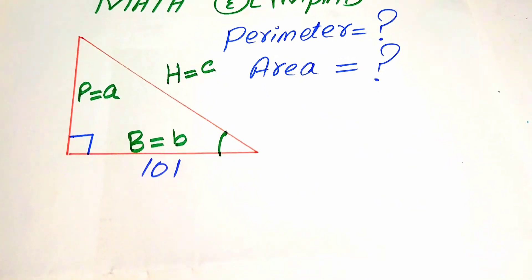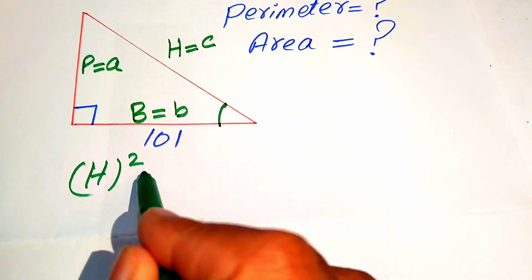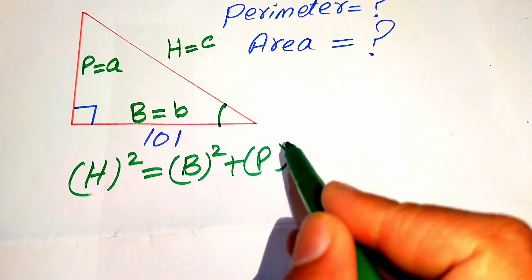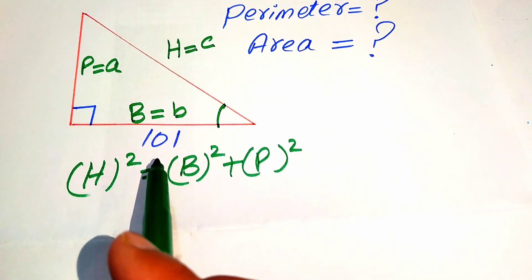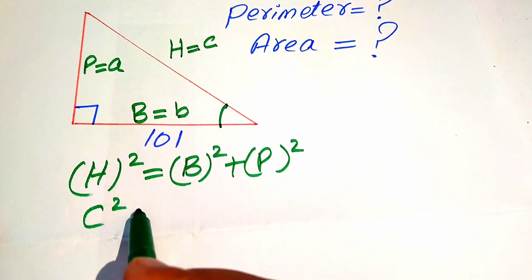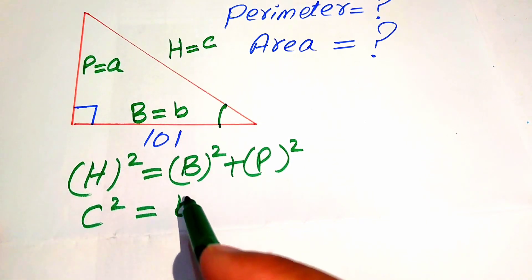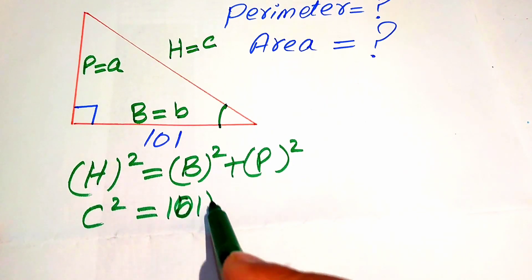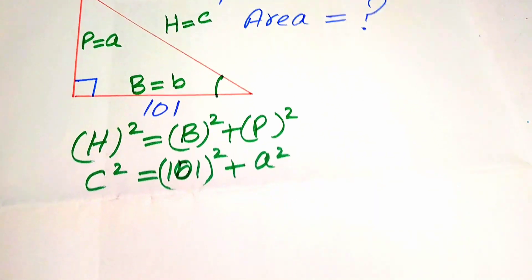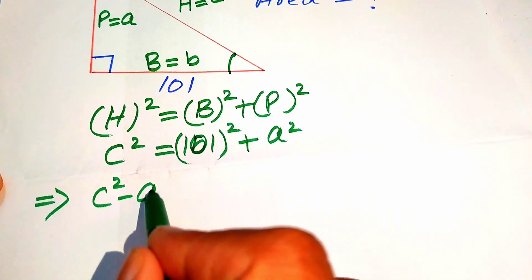Now we use the Pythagorean theorem in order to solve this problem. The Pythagorean theorem is stated as: hypotenuse squared equals base squared plus perpendicular squared. Now we substitute the values of h, b, and a. The value of h is c, so it becomes c squared. The value of b is 101, so we substitute 101 squared, and the perpendicular is a squared.